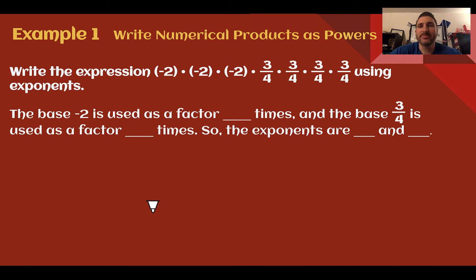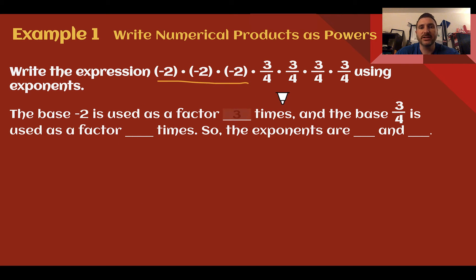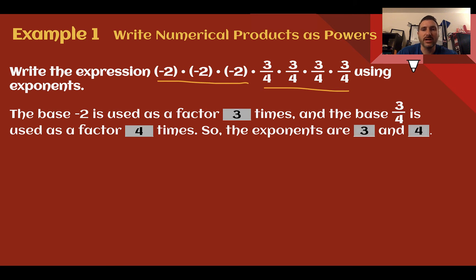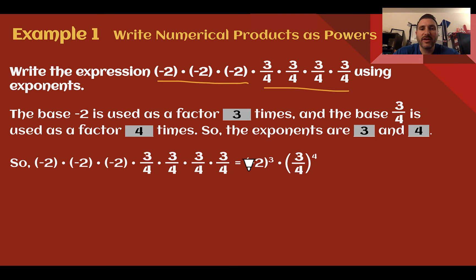Example 1: Write numerical products as powers. Write the expression negative 2 times negative 2 times negative 2 times 3 fourths times 3 fourths times 3 fourths times 3 fourths using exponents. Using exponents can save us some time here. The base of negative 2 was used as a factor 3 times, and the base of 3 fourths was used as a factor 4 times. So our exponents would be 3 and 4 respectively: negative 2 to the 3rd power times 3 fourths to the 4th power. Just total up how many there are and put it to that power.